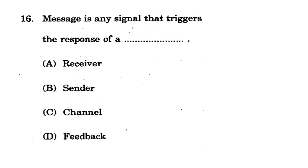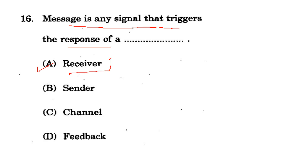Question 16: A communication message is any single signal that triggers the response of whom? Options: receiver, sender, channel, feedback. The correct answer is option A - receiver. A message waits for the receiver, so signals trigger the response of the receiver.